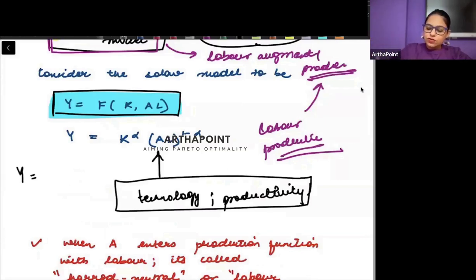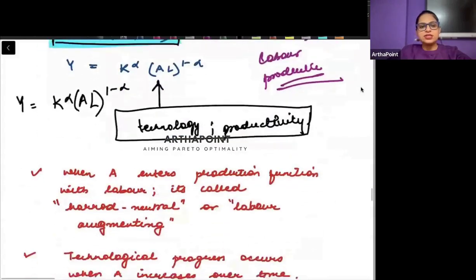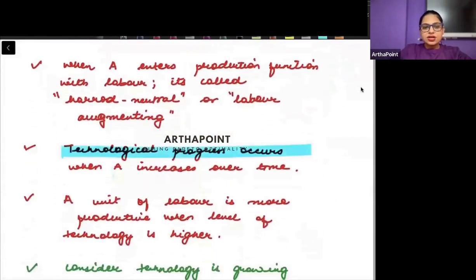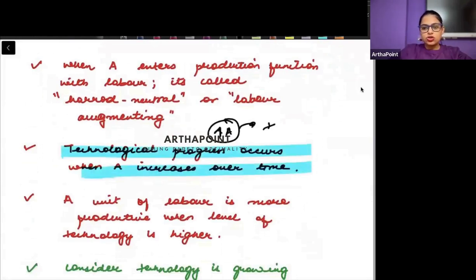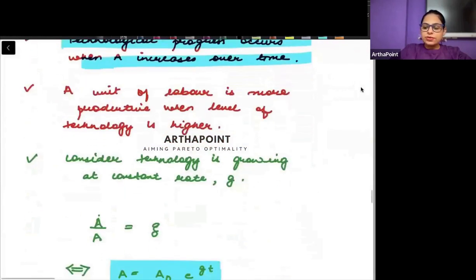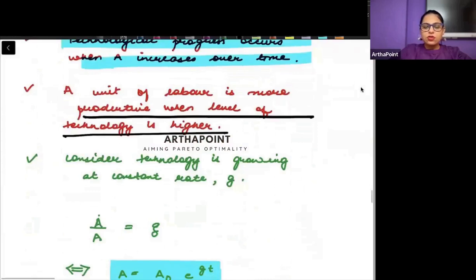So instead of writing the production function as K to the power alpha, L to the power 1 minus alpha, I will have K^α · (AL)^(1-α). Technological progress occurs when A increases over time. If the value of A increases, it means that there is technological progress taking place. A unit of labor is more productive when the level of technology is higher.